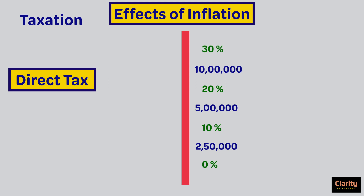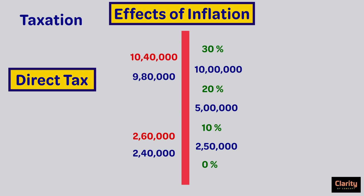These are called tax slabs. Imagine your income was 2.4 lakh per annum. Since it falls in the 0% income tax slab, you will not be paying any income tax. We just learned that inflation increases our nominal income, so because of inflation, nominal income may become 2.6 lakh, pushing you into the 10% income tax bracket. Similarly, a person having 9.8 lakh rupees per year falls under the 20% tax slab, but due to inflation this income may become 10.4 lakh, pushing it into the 30% tax slab. This is also called the bracket creep effect of inflation.